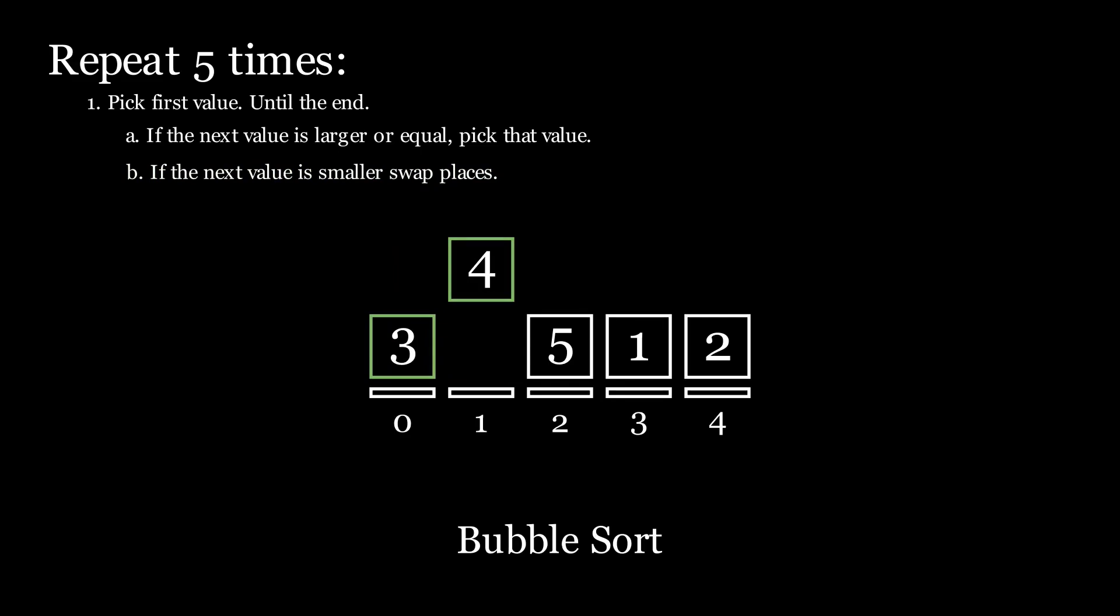Next we compare 4 and 5. We now apply rule A because the next value, 5, is larger than the value 4. So, we set the value 4 down and pick the value 5 as our value to follow.